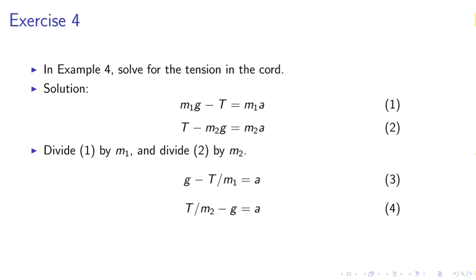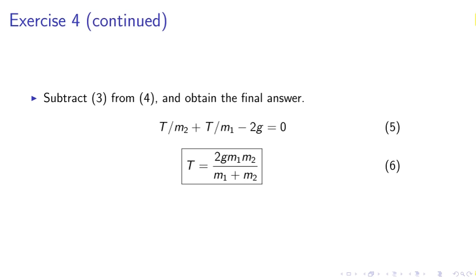We first divide the first equation by M1 and divide the second equation by M2. Then we subtract equation 3 from equation 4 and obtain the final answer: T equals 2g M1 M2 over M1 plus M2.